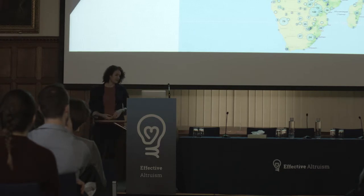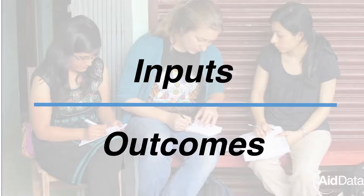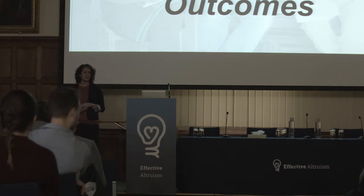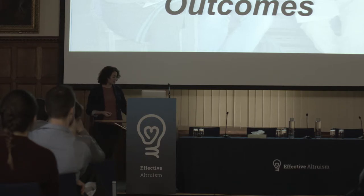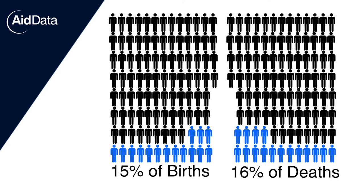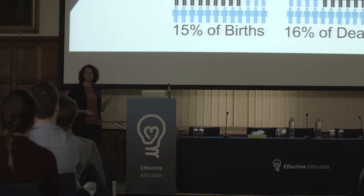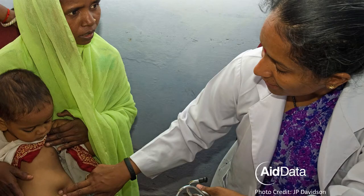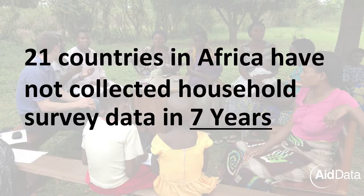This only tells part of the story. To really understand development investment, precise data on inputs needs to be met by equally precise data on outputs to evaluate whether investments are yielding impacts. We only have actual data on maternal mortality for 15% of all births and on malaria for only 16% of all deaths. For 6 countries in Africa there's practically no maternal mortality or malaria data at all. India, which has the highest number of malnourished people in the world, has not produced nationally representative malnutrition data in over a decade. And 21 countries in Africa have not collected national survey data in more than 7 years.